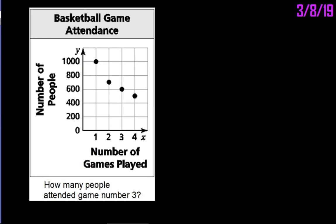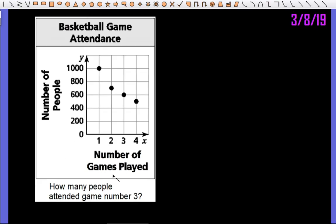It says how many people attended game three. So we go to game three and we go up, and hey, right there's a point, and more specifically it is 600.